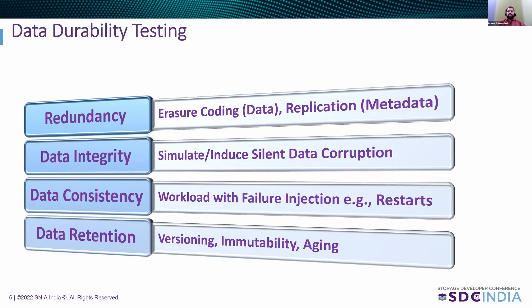Another important area is durability testing. We consider four areas: redundancy, data integrity (DI), data consistency (DC), and data retention. Erasure coding protects data by creating parity from data units, and in case of data loss, recovery can happen by rebuilding data from the parity. For testing this, we consider various failure scenarios like failure of data blocks due to data loss of disk or enclosure, or data corruption. The erasure coding schemes are represented with N+K+S values, where N is data, K is parity, and S is spare. For metadata replication, we have a DIX configuration specifying the number of metadata copies to be maintained throughout the storage cluster. Finding optimal combinations of these configurations presents a testing challenge.